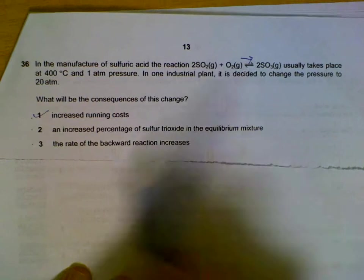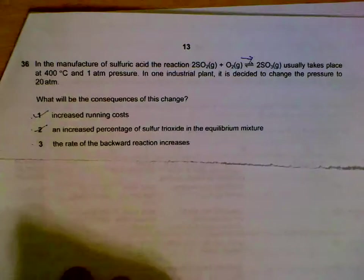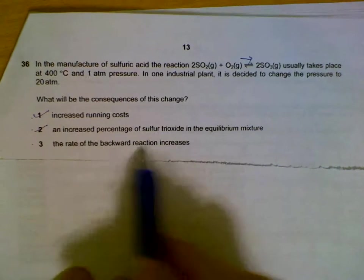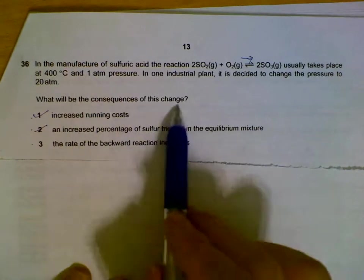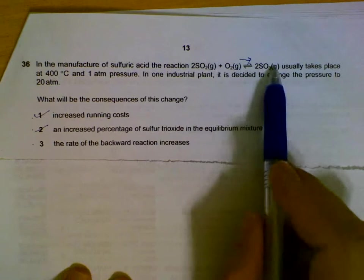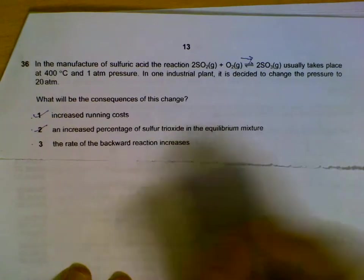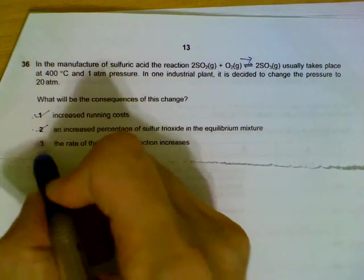And then increasing the pressure will shift the equilibrium to the side where there are less gas molecules, so it will shift to the right—you have more sulfur trioxide. The rate of the backward reaction increases when pressure is increased. There will be more concentrated reactants and products, so both the forward and backward reactions will increase.